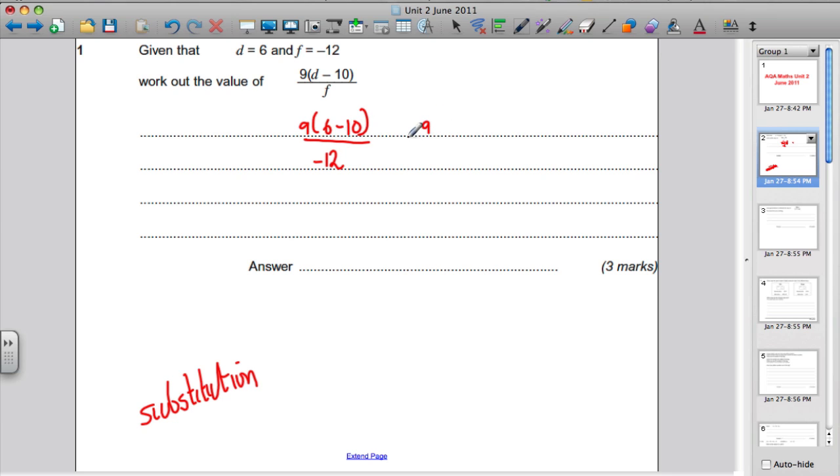So the top is actually 9 multiplied by negative 4 all over negative 12. 9 times 4 is 36, so 9 times negative 4 is negative 36 all over negative 12. And negative 36 divided by negative 12 is 3. Negative divided by negative gives you a positive, so the answer is 3. Really should be getting that question 100% correct.